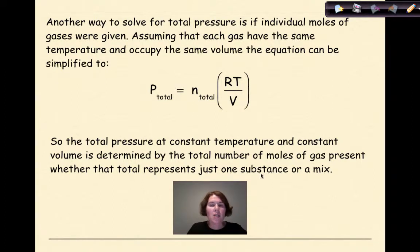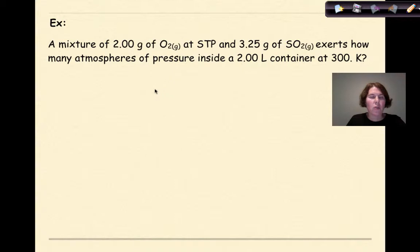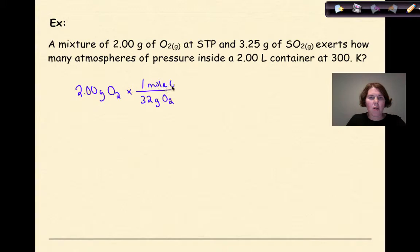Let's look at the next example. A mixture of 2 grams of oxygen at STP and 3.25 grams of SO₂ exerts how many atmospheres of pressure inside a 2-liter container at 300 Kelvin. The first thing we need to do is convert to moles. So I have 2.00 grams of oxygen gas, and the gram formula mass of O₂ is 32 grams per mole, giving me 0.0625 moles of O₂.